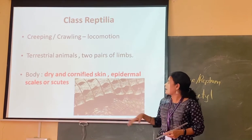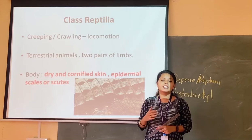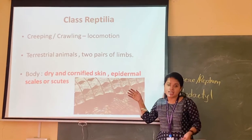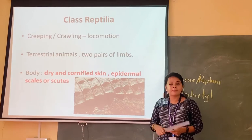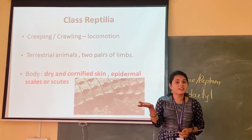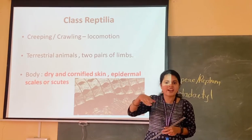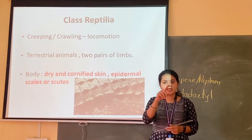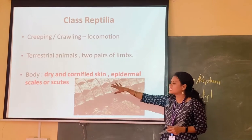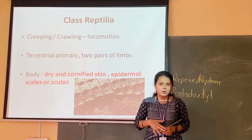Now these epidermal scales or scutes are sometimes shed by some animals. For example, in the case of snakes — you must have seen in nature the skin shed from snakes. That is actually the exoskeleton, the epidermal scales or scutes that they shed, and then after some period of time they develop new ones.